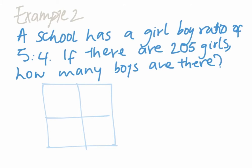So we're talking about girls. Girls, that's your first row, and boys, that's your second row. So a school has a girl-boy ratio of five to four. So five is girl, four is boy. It's basically in the same order.